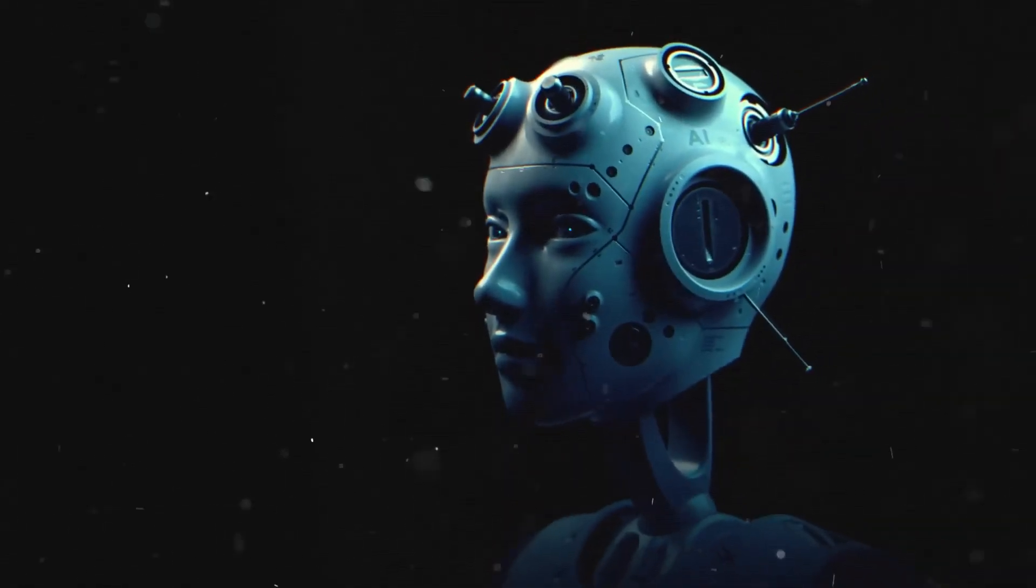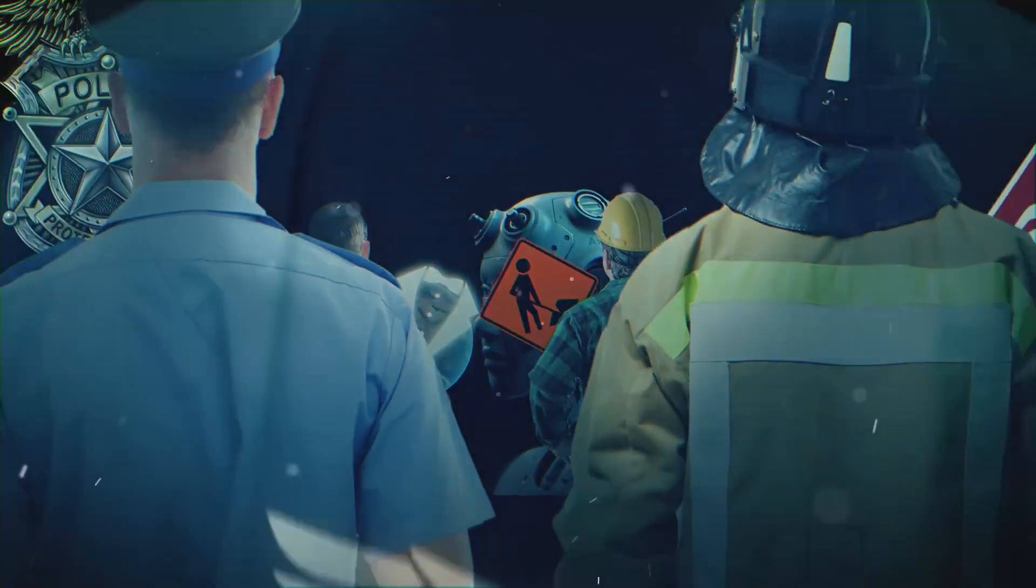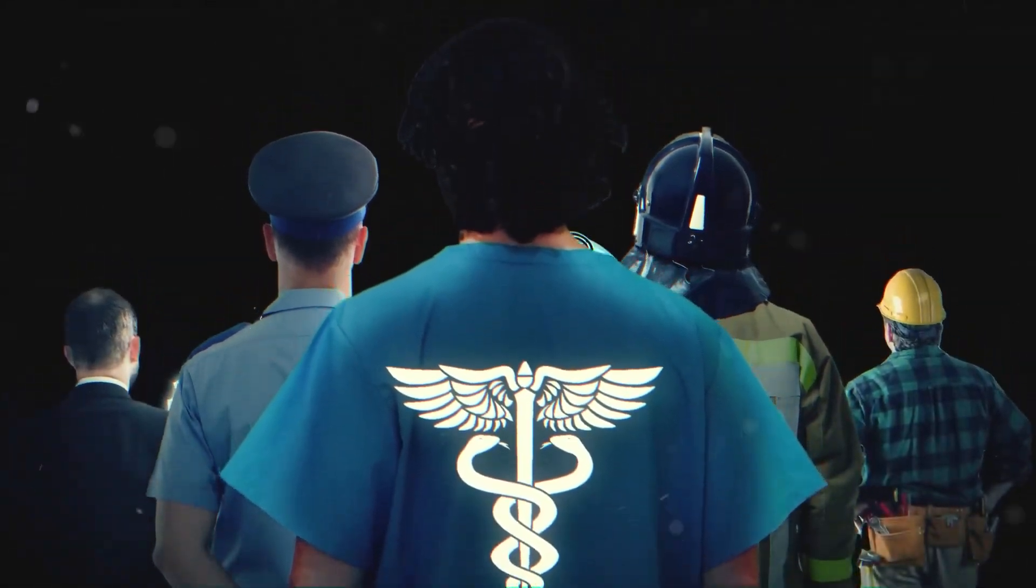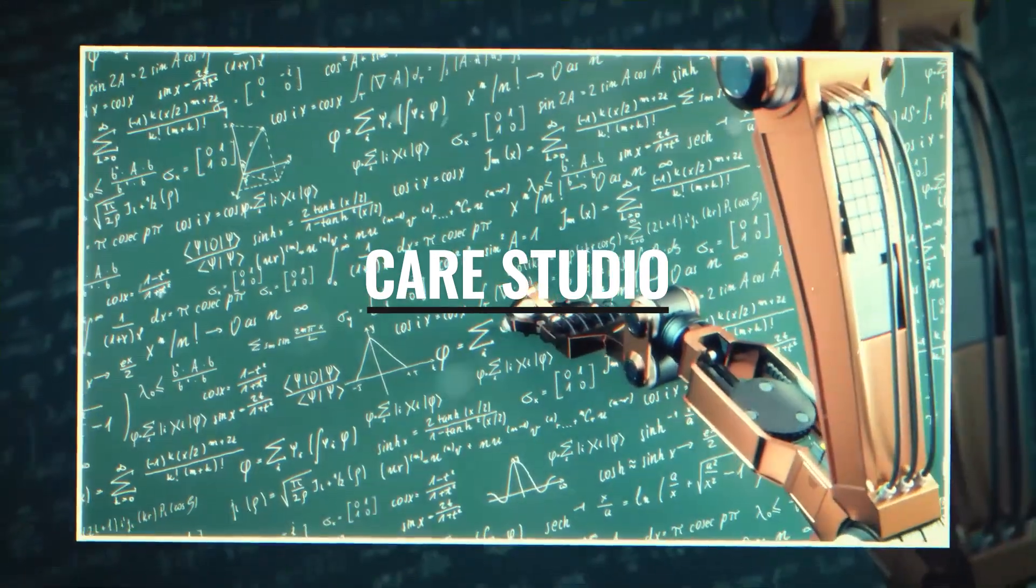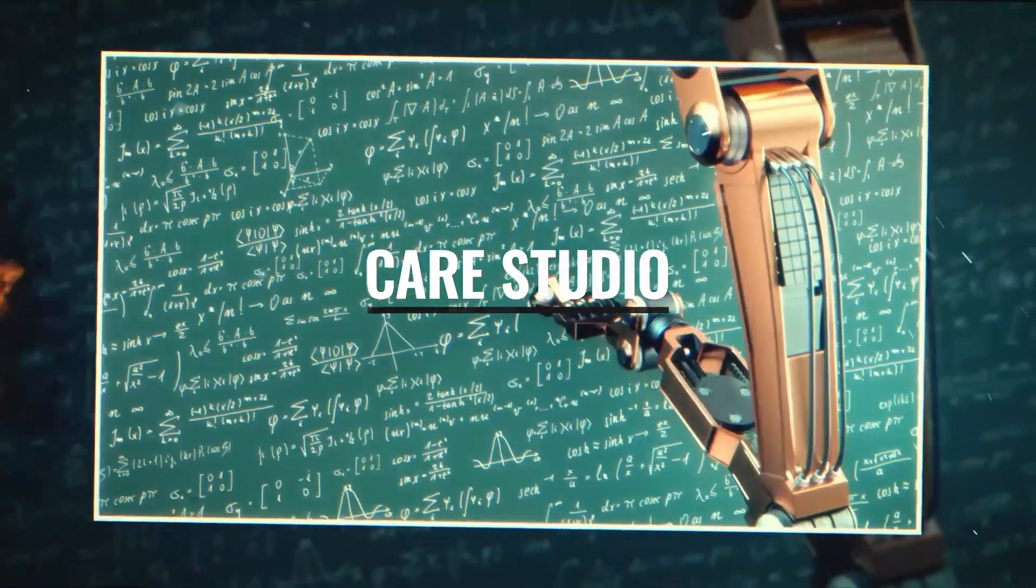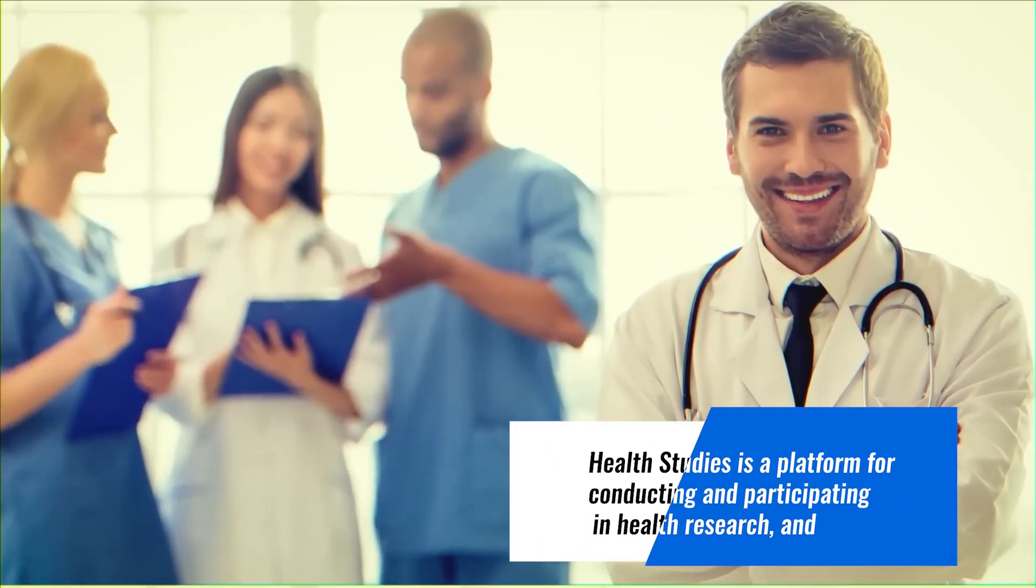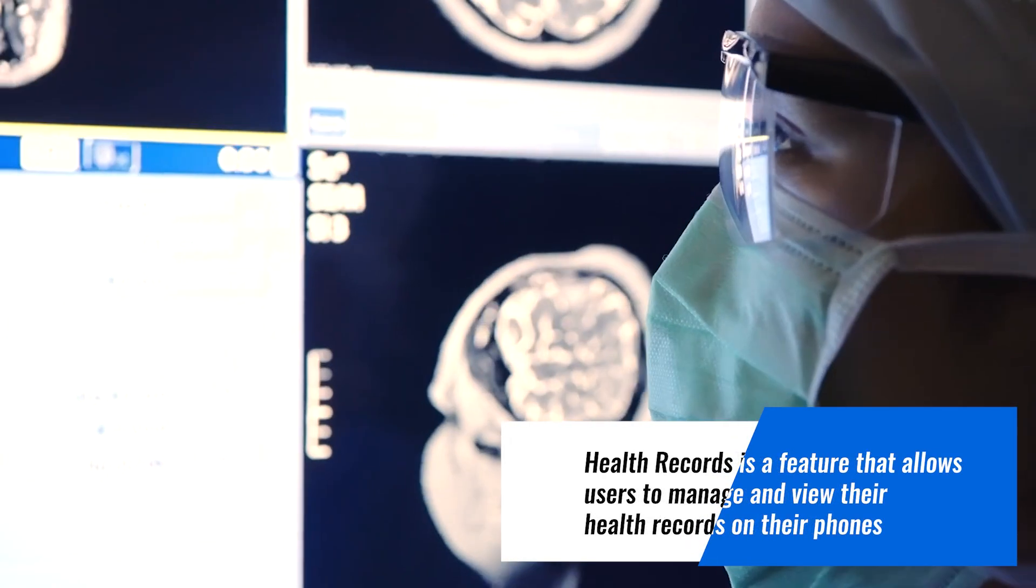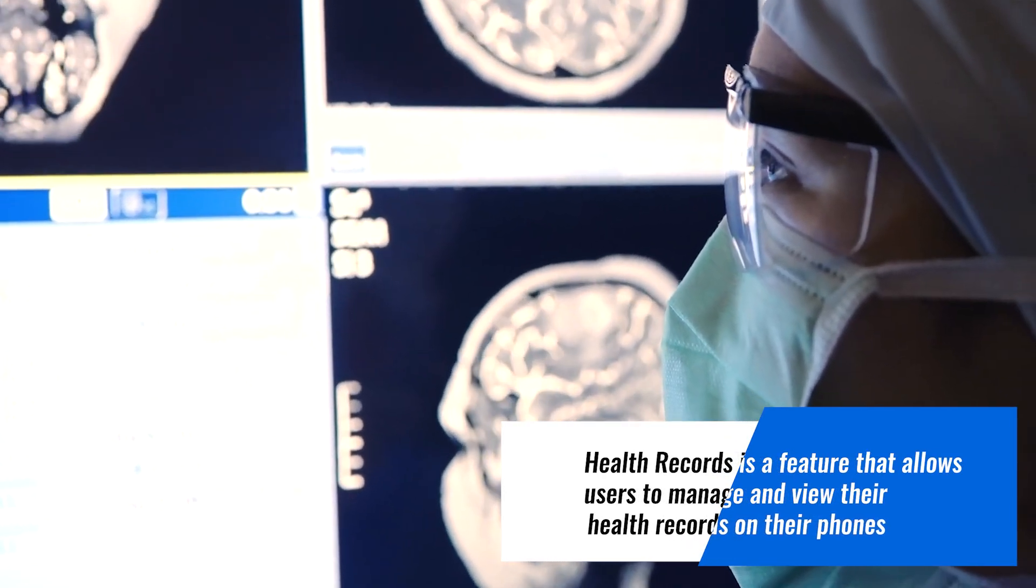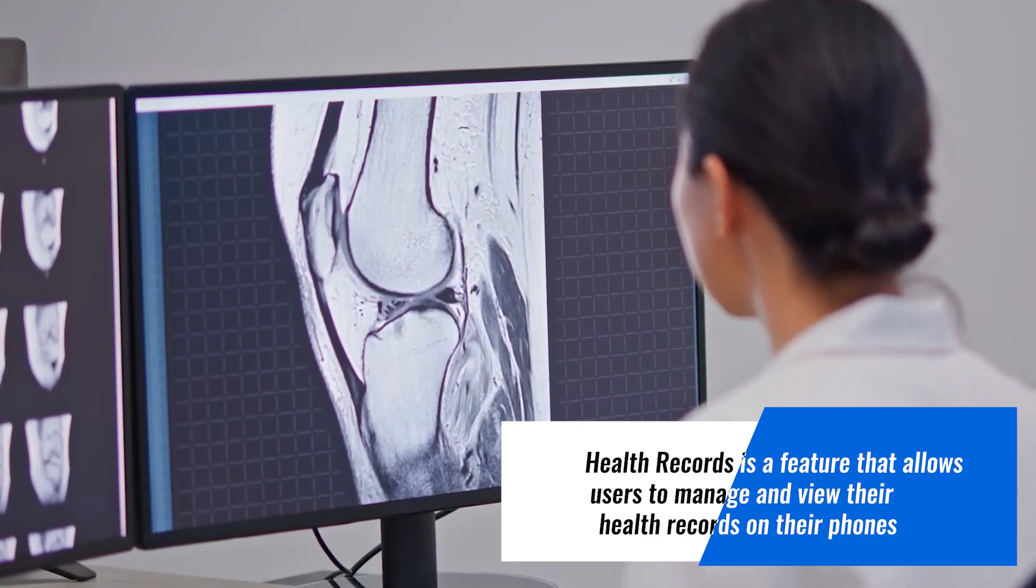Google Health is a dedicated division of Google that creates and provides AI-based solutions and products for healthcare and wellness. Some of the notable products include Care Studio, which is a clinical search and decision support tool for medical professionals. Health Studies is a platform for conducting and participating in health research, and Health Records is a feature that allows users to manage and view their health records on their phones.